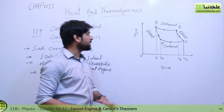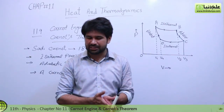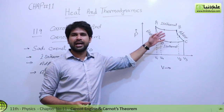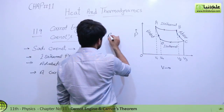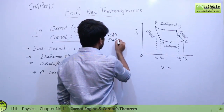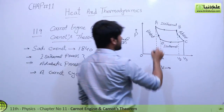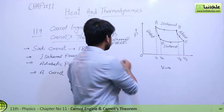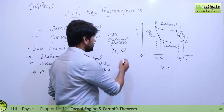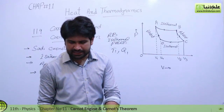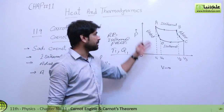In the first process, we have gas which is in the cylinder. What happens is the gas expands isothermally - the heat source is connected to the system. The heat absorbed from the hot reservoir will be Q1 at temperature T1, and the gas expands isothermally, meaning the temperature is maintained.